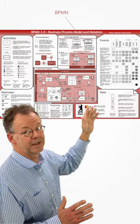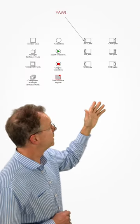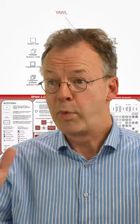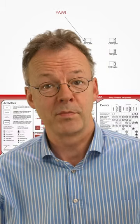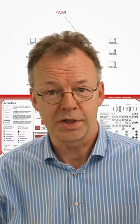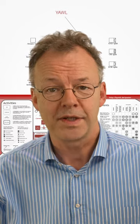This is BPMN and this is YAWL. Both are made for business process modeling and business process automation. How can they be so different?